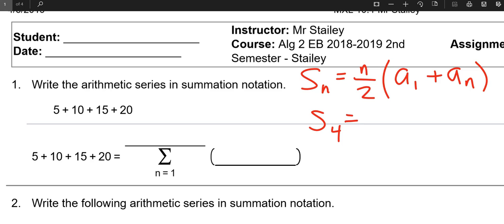In this particular case, we have four terms, and the first term is obviously five, and the last term is obviously twenty. And now we know that four over two is two, and five plus twenty is twenty-five. So we're really going to have two times twenty-five.